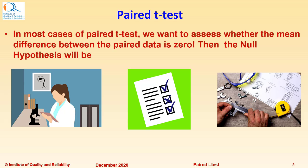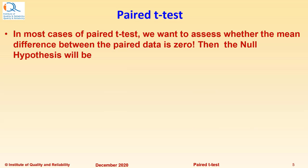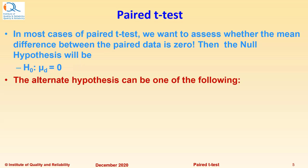In most cases of Pair T-Test, we want to assess whether the mean difference between paired data is zero. Then the null hypothesis will be given by H₀: μd = 0 where μd is the mean difference between the paired data. The alternate hypothesis can take one of the following forms.